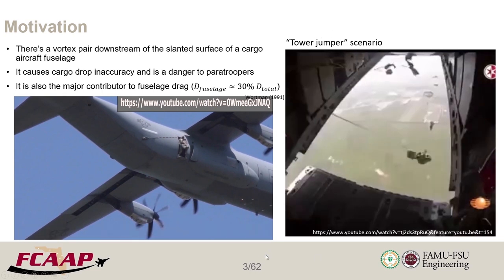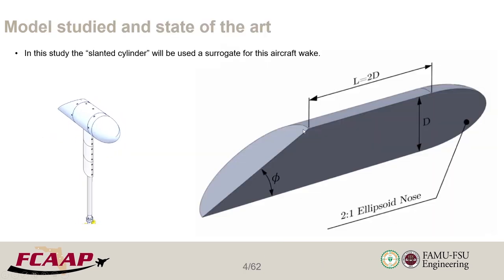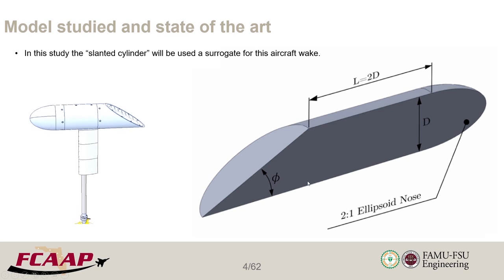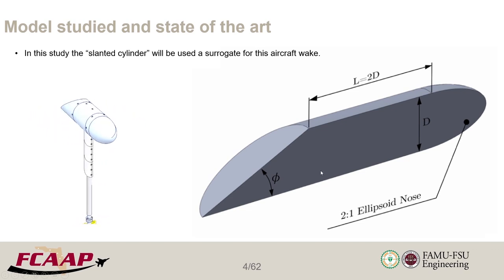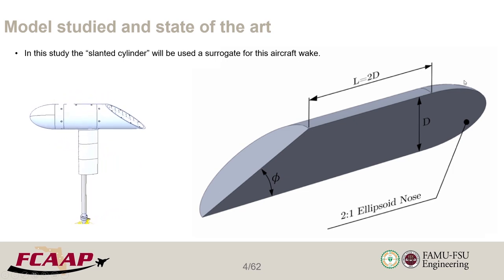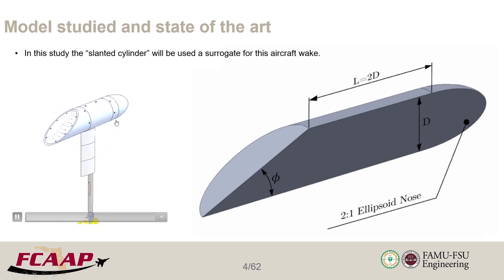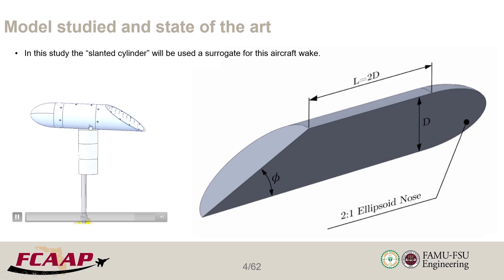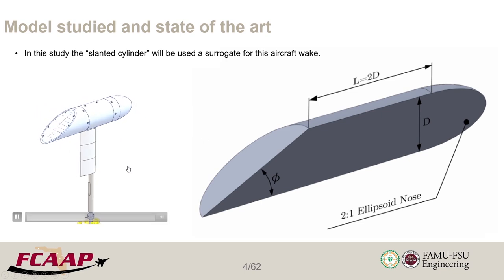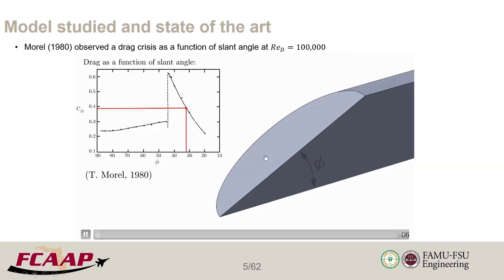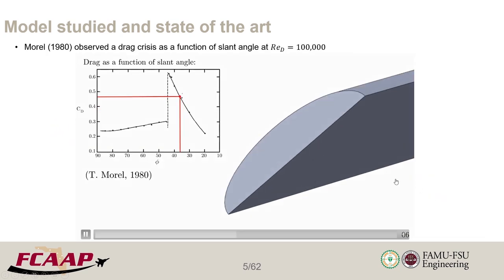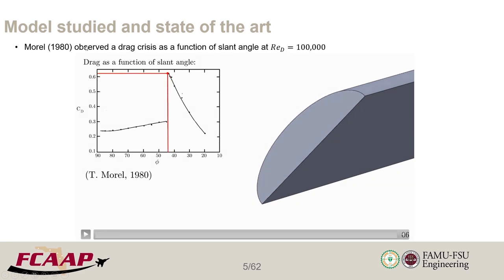Now let's go into the model we're looking at. We're looking at the slanted cylinder, or the cylinder with the slanted afterbody, which is a simplification of the general aircraft model with the slanted surface. It's basically a bullet model with a slanted surface in the back. On the left you're seeing the experimental physical configuration of the setup — the slanted cylinder with a strut mount with a wing.